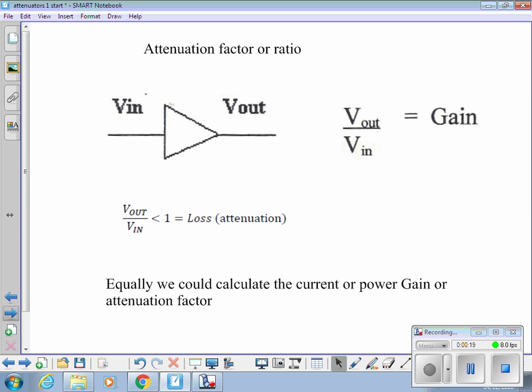Gain is how many more times do we get, how much bigger is the output than what we're putting in. So V_out over V_in would be the voltage gain of that amplifier if it was a voltage amplifier.